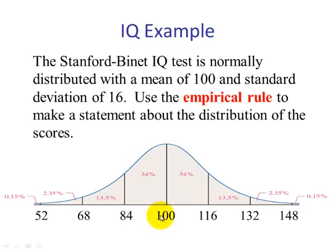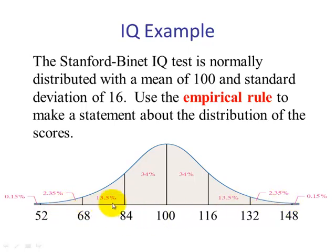If we go two standard deviations below the mean — subtracting 16 twice — we get 100 minus 32, which is 68. Two above gives us 132. This will contain 95% of scores. Going one more standard deviation out in each direction, we expect 99.7% of the scores to be within 52 to 148.